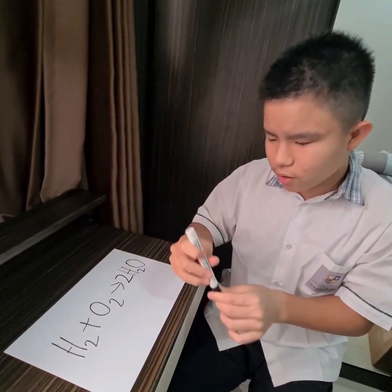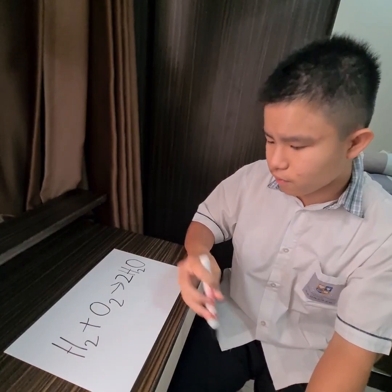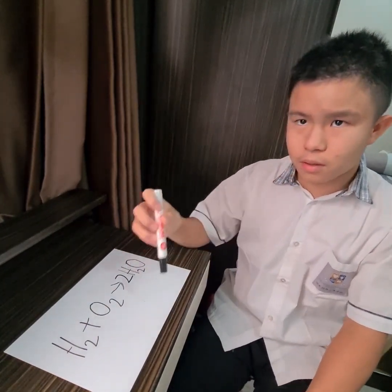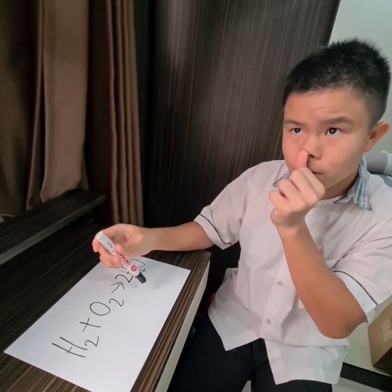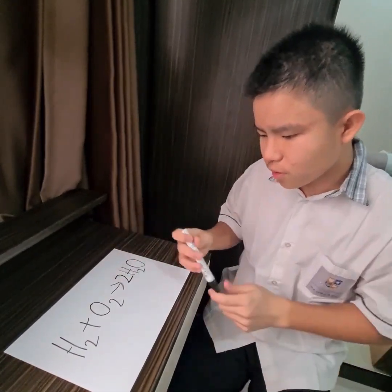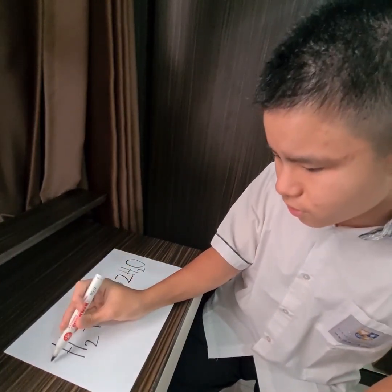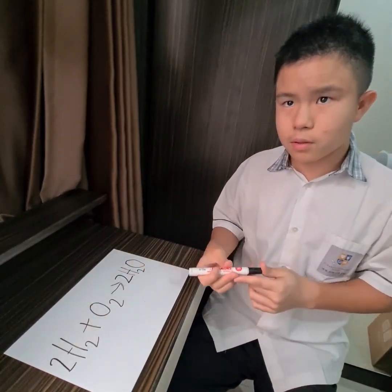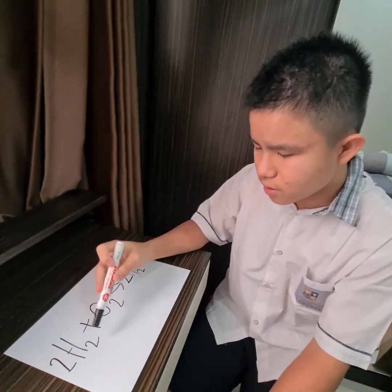Now we have balanced oxygen. Then there are four hydrogen atoms on the right, so we have to add a coefficient of two in front of the hydrogen molecule on the left to balance it.